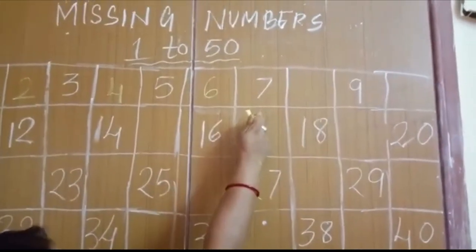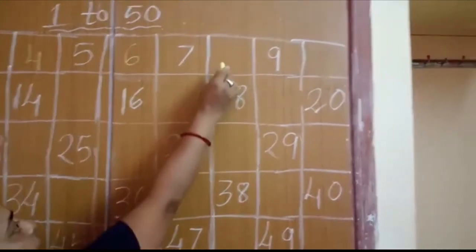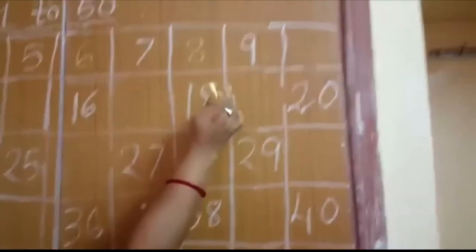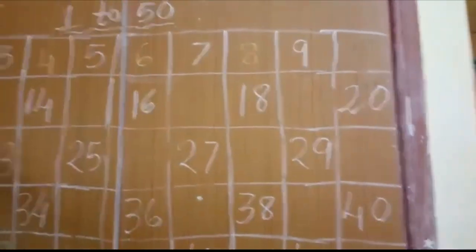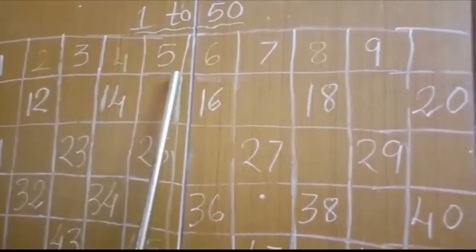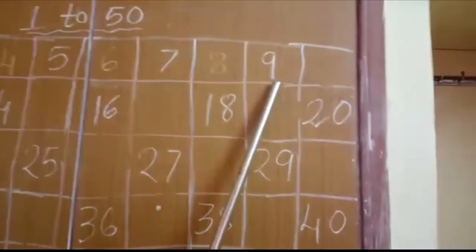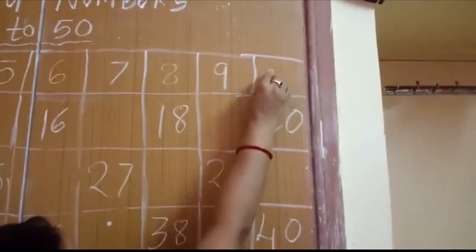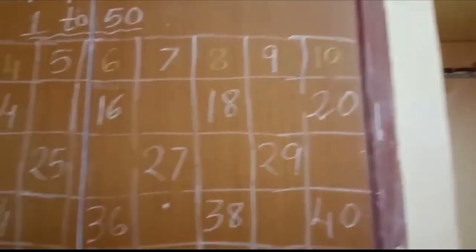6, 7. Now what number will come after 7? 8, 9. What number will come after 9? 1, 2, 3, 4, 5, 6, 7, 8, 9 — what number will come? Yes, exactly. 10 will come after 9.